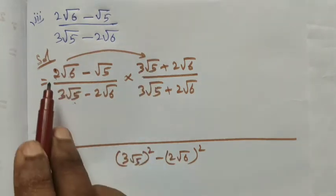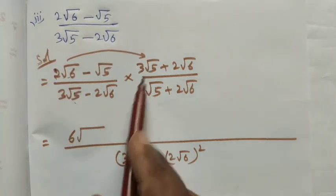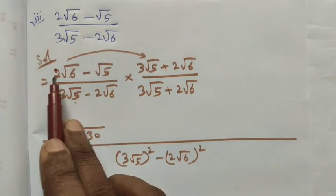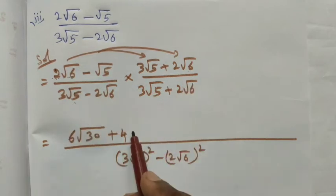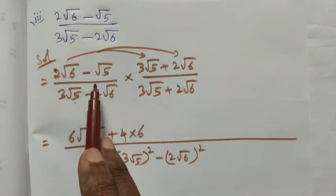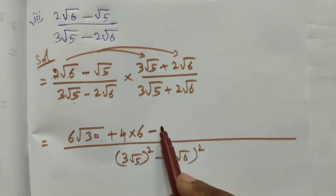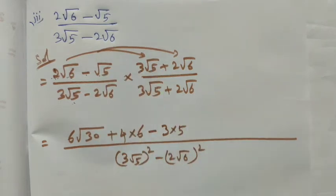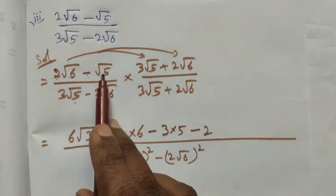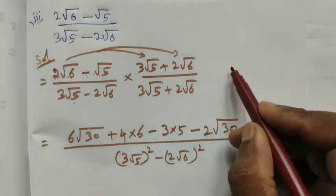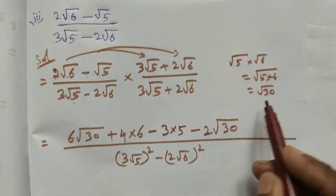Multiplying in the numerator: 2√6 × 3√5 = 6√30. Then 2√6 × 2√6 = 4 × 6 = 24, with a negative symbol from the conjugate. Then -√5 × 3√5 = -3 × 5 = -15, and -√5 × 2√6 gives -2√30. Here √5 × √6 = √30.